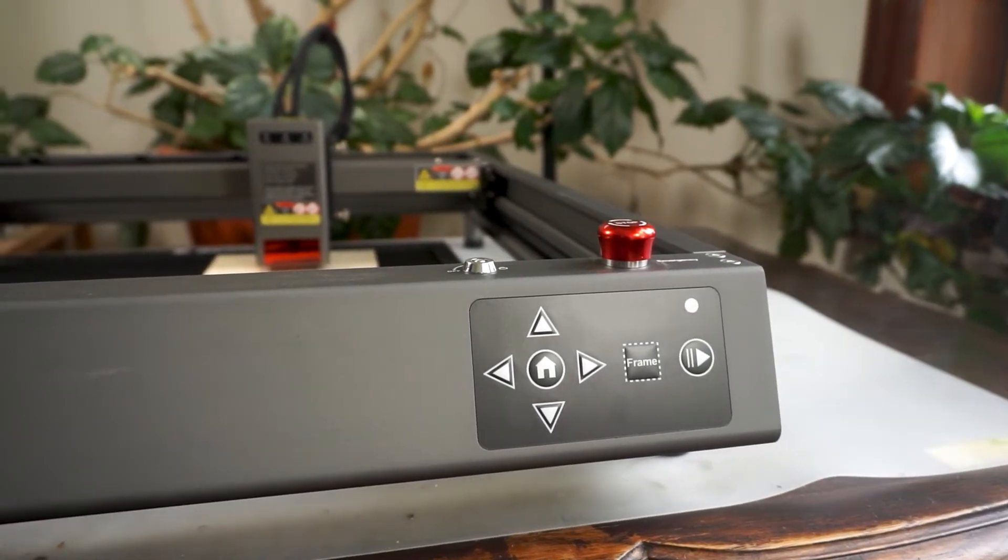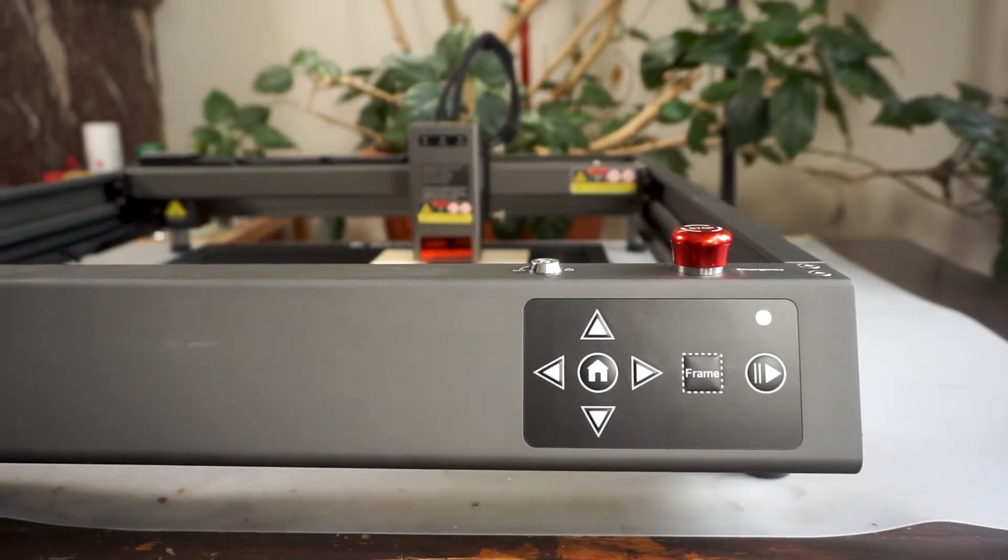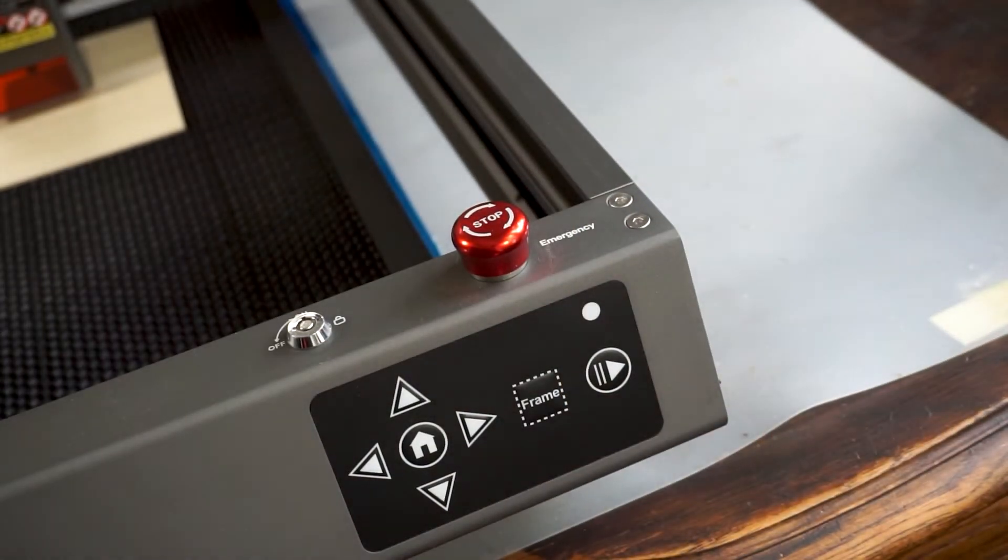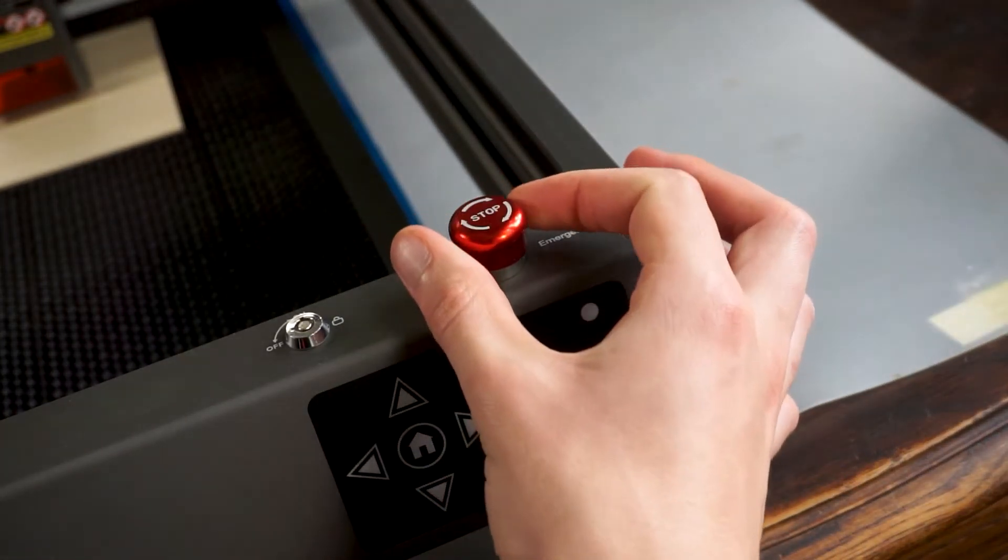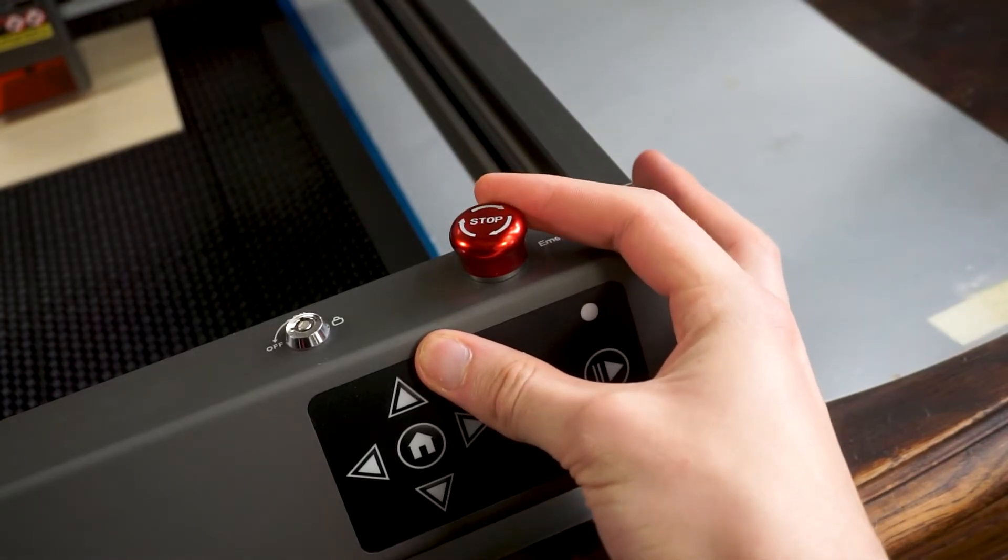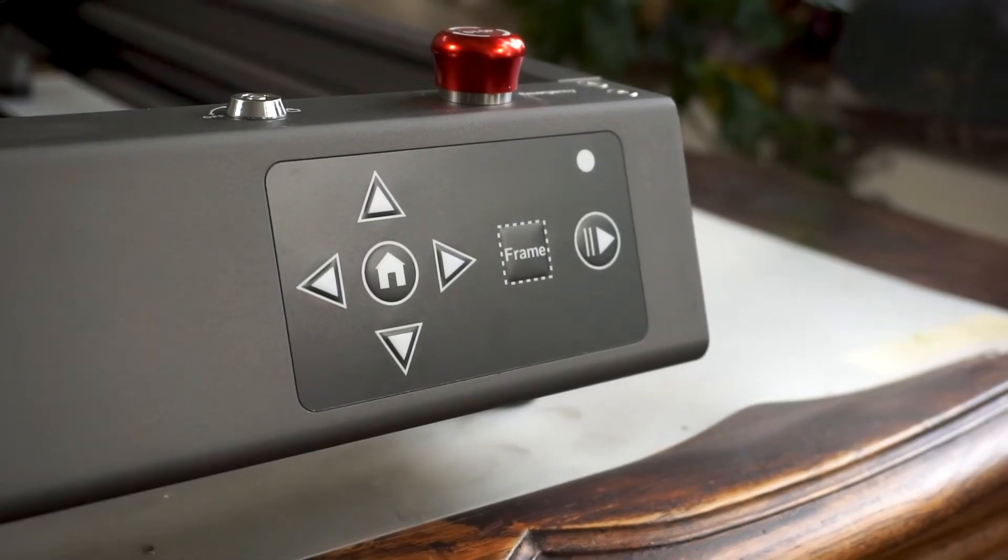Then, the emergency stop button works very well. The laser and the air pump shut off immediately if you press it, and to make the machine usable again, you have to unlock the emergency button by turning it so it pops back up.